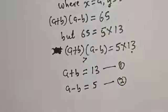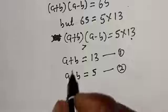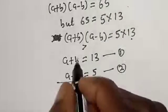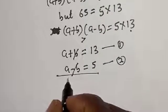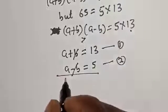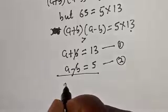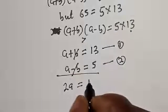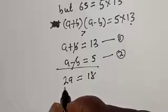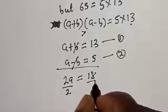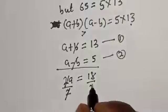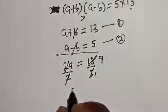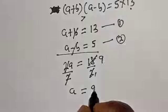Adding equation 1 and equation 2 together, the b terms cancel. We get 2a equals 13 plus 5, which is 18. Dividing both sides by 2, therefore a is equal to 9.